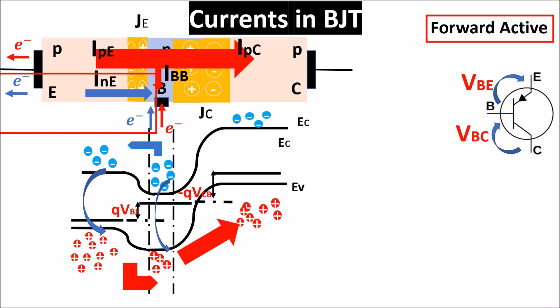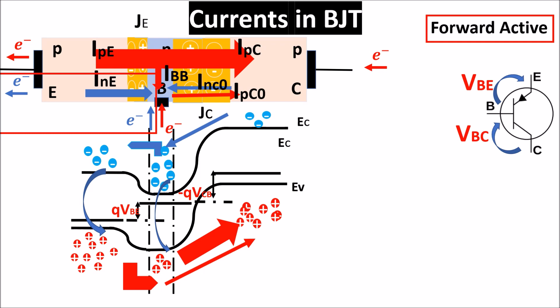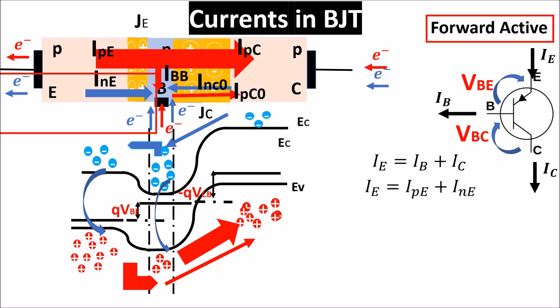The holes current IPC must be replaced by electrons coming from the VBC source for neutrality. Lastly, we have the saturation current of the reverse-biased junction JC, where a few holes from the base go to the collector and a few electrons from the collector go to the base — giving two contributions INC0 and IPC0 and their related electrons supplied by the source. The incoming currents equal the outgoing ones, where IE, IB, and IC are defined accordingly.